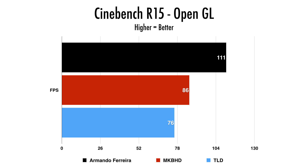Now Cinebench R15 OpenGL — as far as I know all machines were running only one graphics card. TLD's setup has the D500 compared to MKBHD's D700, so there is a graphics card difference. The clear winner here was the PC. The graphics card was just cruising at 35-40% utilization — and remember, that was only one graphics card — managing 111 FPS. MKBHD came in second at 86 FPS with the better D700 cards, and TLD's setup scored 76 FPS.